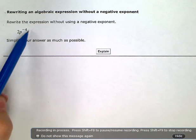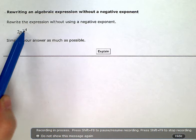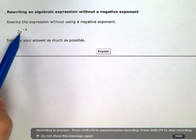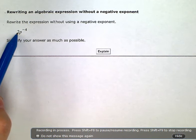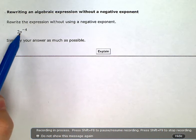Now, this negative 4, this exponent, is only on the p, not on the 2. So it's important to remember this negative 4 is only attached to the p.